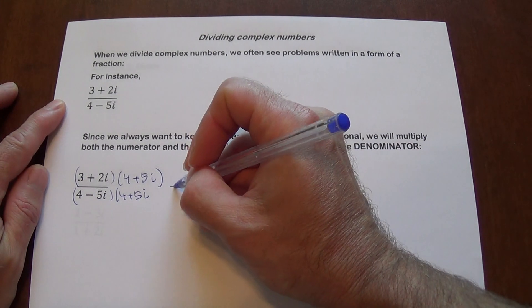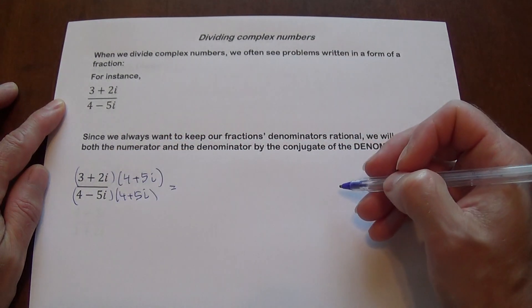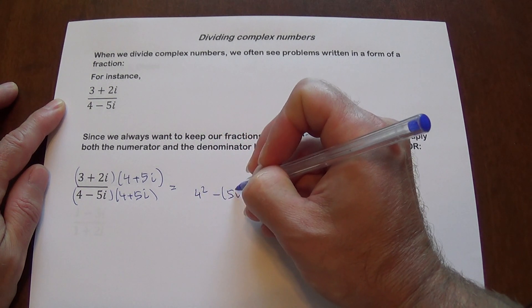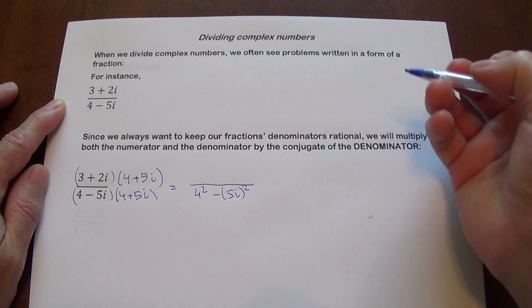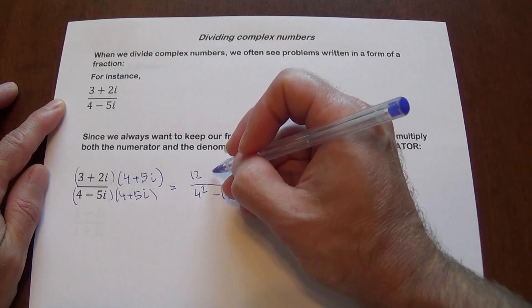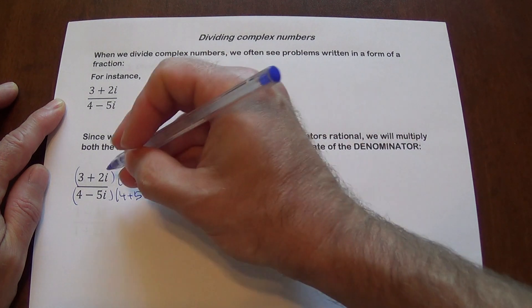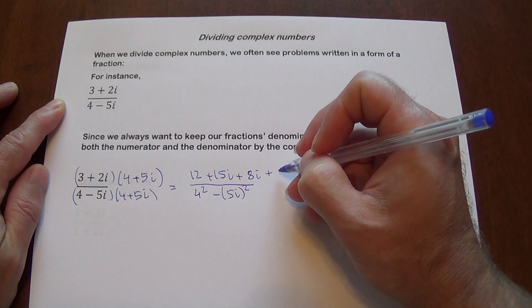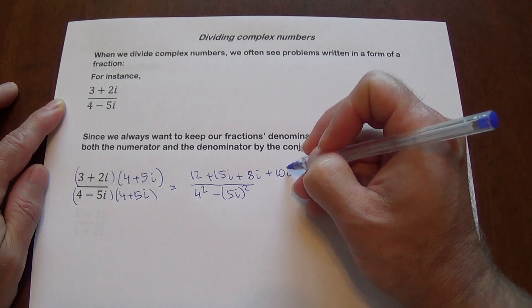So we're going to multiply this, the bottom is going to give you the difference of squares, this is going to give you 4 squared minus 5i squared. The numerator we're just going to FOIL it. So 3 times 4 is 12, 3 times 5i is plus 15i, 2i times 4 is 8i, and 2i times 5i is going to be 10i squared.